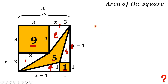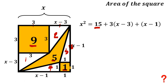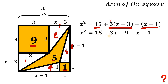So x squared, the area of the whole figure, must equal 9 plus 5 plus 1, plus the area of the rectangle with side lengths 3 and x minus 3, which is 3 multiplied by x minus 3, plus the area of the rectangle with side lengths 1 and x minus 1. Let's simplify: multiplying 3 by x minus 3 gives 3x minus 9, so x squared equals 15 plus 3x minus 9 plus x minus 1. Combining like terms, x squared equals 4x plus 5, since 3x plus x is 4x and 15 minus 9 minus 1 is 5.